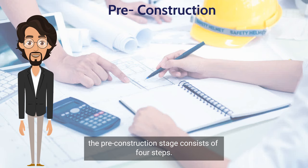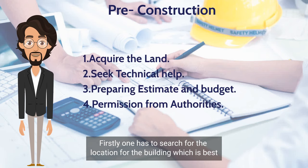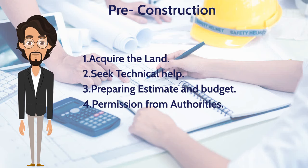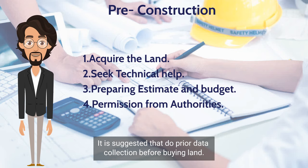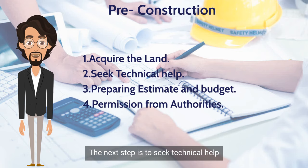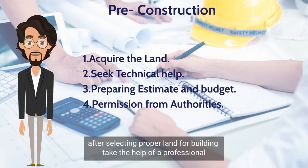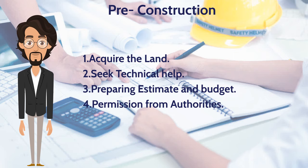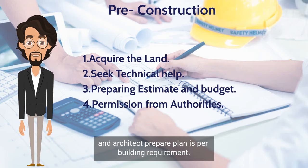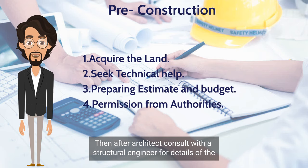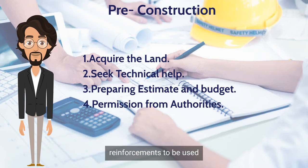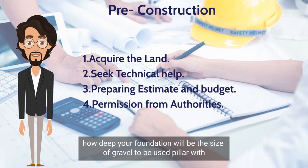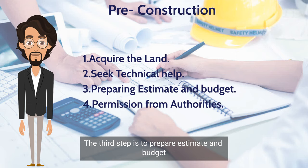The pre-construction stage consists of four steps. Firstly, one has to search for the location best suited for building construction purposes. It is suggested to do prior data collection before buying land. The next step is to seek technical help — after selecting proper land, take the help of a professional architect to create building designs. An architect prepares plans as per building requirements, then consults with a structural engineer for details of reinforcements, foundation depth, gravel size, and pillar width.